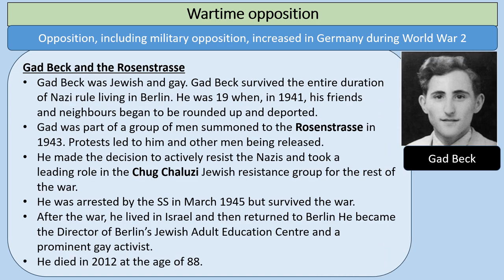An interesting example related to the Rosenstrasse is Gadbeck, who was Jewish and gay. Gadbeck survived the entire duration of Nazi rule living in Berlin. He was 19 when, in 1941, his friends and neighbours began to be rounded up and deported. He was part of the group summoned to the Rosenstrasse in 1943 and protests led to him and other men being released. He made the decision to actively resist the Nazis and took a leading role in the Cholutz Jewish resistance group for the rest of the war. He was arrested by the SS in March 1945 but survived the war. After the war he lived in Israel and returned to Berlin, becoming the director of Berlin's Jewish Adult Education Centre and a prominent gay activist. He died in 2012 at the age of 88.